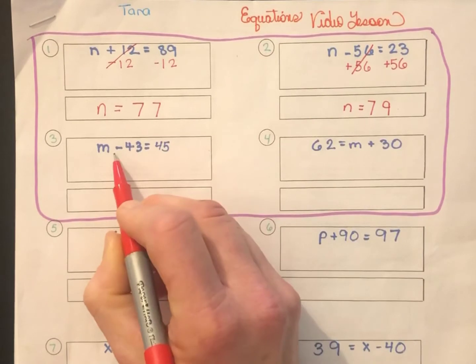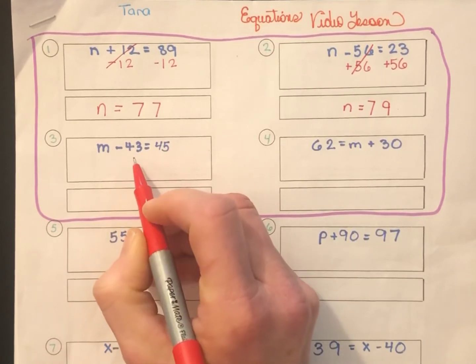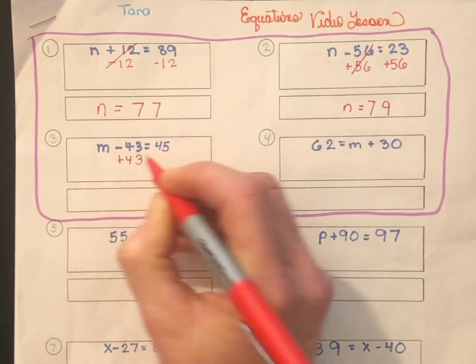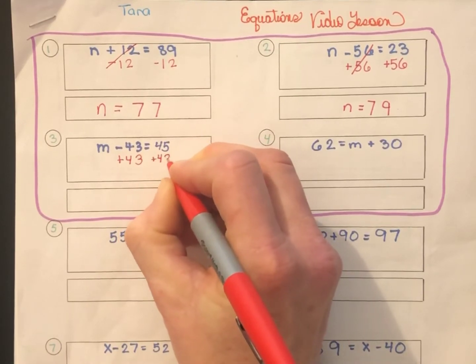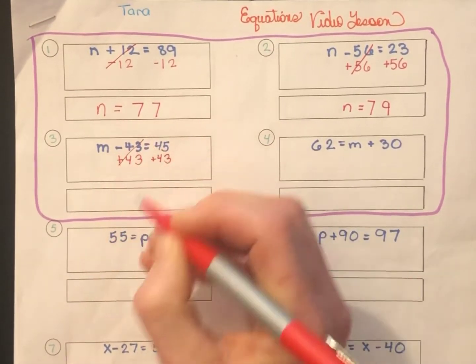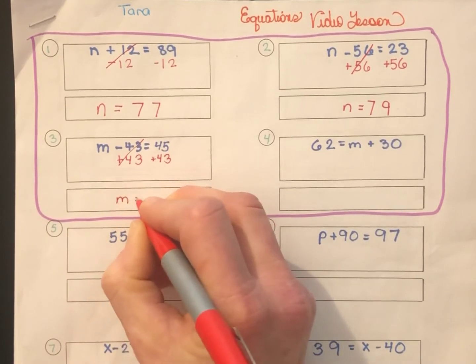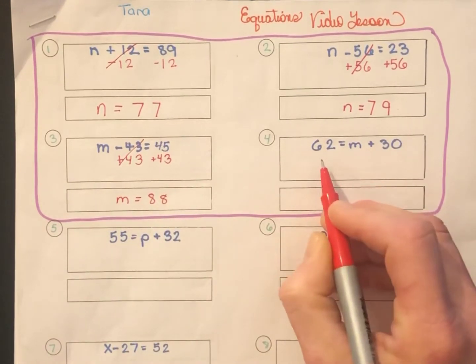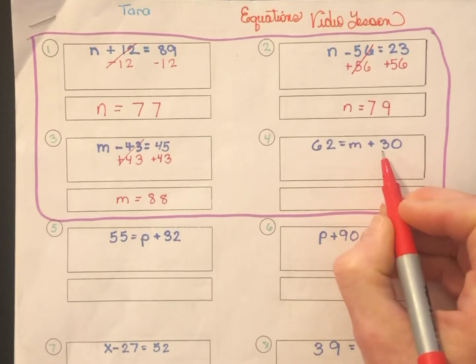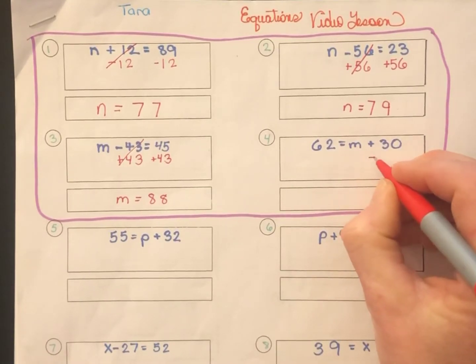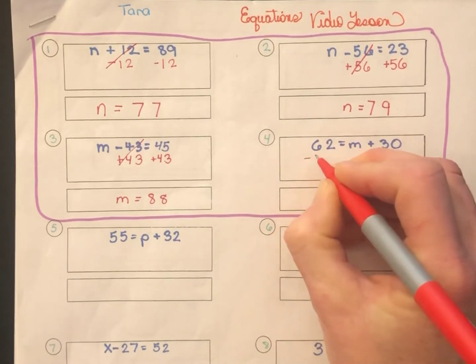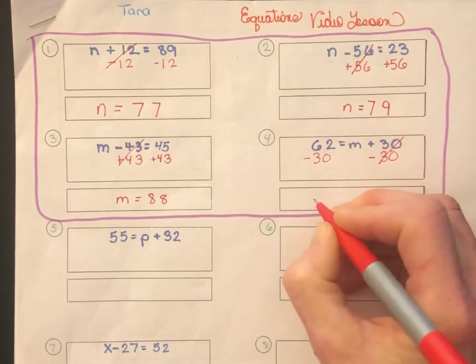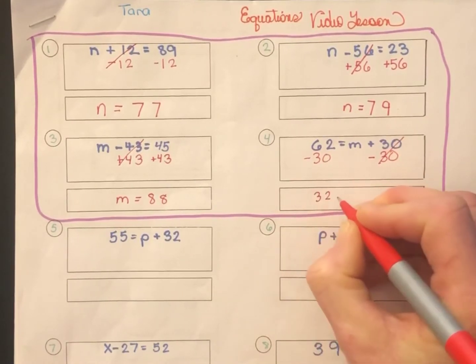Number three, m minus 43 equals 45. The opposite of negative 43 is positive 43. Add 43 to both sides. That cancels out. We'll end up with m equals 45 plus 43 is 88. Number four, 62 equals m plus 30. This time, m's on the other side. No different. The opposite of positive 30 is negative 30. 62 minus 30 is 32 equals m. I can also write this m equals 32.